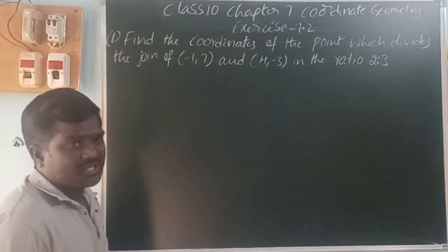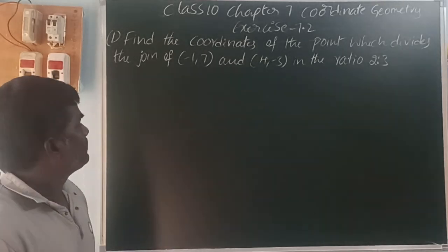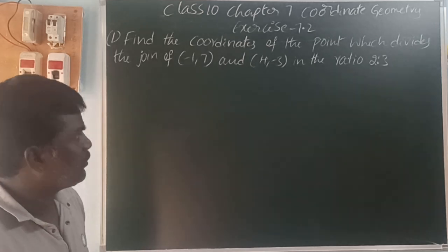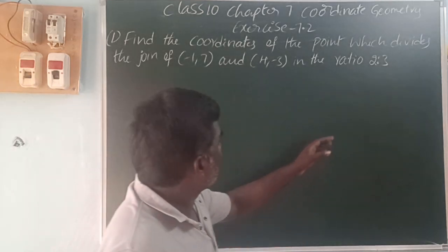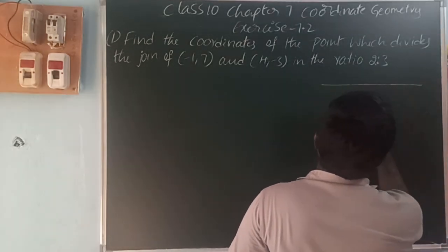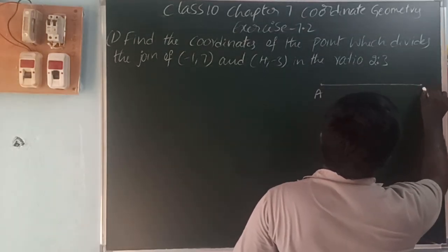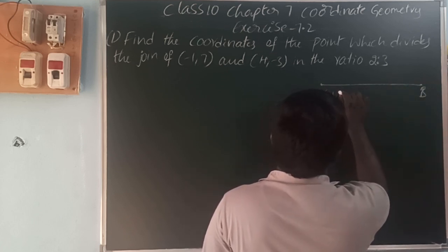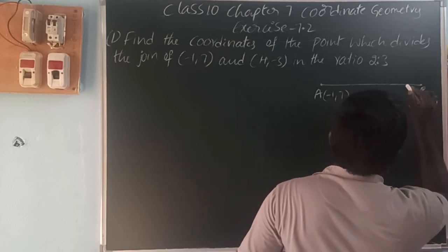First question. Find the coordinates of the point which divides the joining of the points minus 1 comma 7 and 4 comma minus 3, in the ratio 2 is to 3. So here, let the point A be minus 1 comma 7, and point B be 4 comma minus 3.